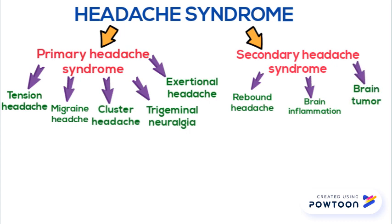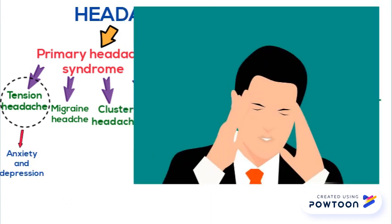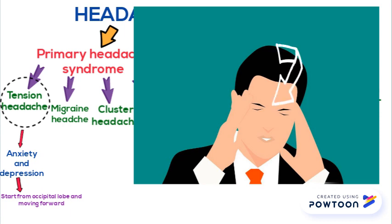Now let's discuss Tension Headache. It is usually caused by Anxiety and Depression. It usually starts from the Occipital region and moves forward. The treatment options available are Physiotherapy Exercises and Low Dose Amitriptyline.